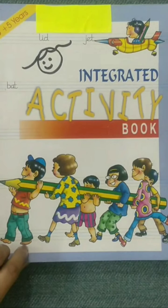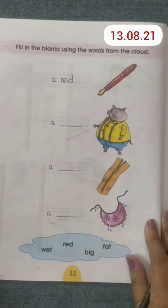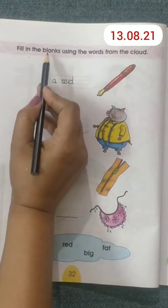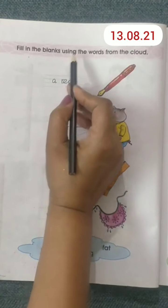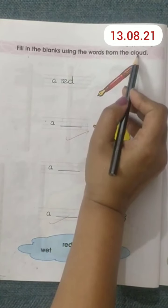Good morning, children. Take out your integrated activity book and open to page number 32. Write down today's date. Today is 13.8.20. Let's read the instructions: fill in the blanks using the words from the cloud.